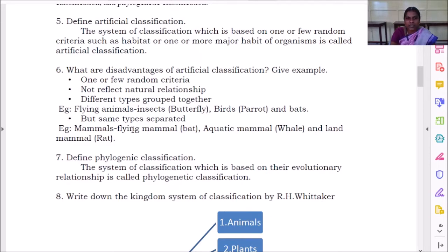These three are combined as mammals. But one is flying, one is in ocean, another one is in terrestrial, means land. So these are the disadvantages of artificial classification.